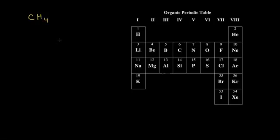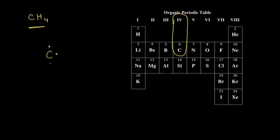If I look at the molecular formula CH₄, which is methane, and I want to draw a dot structure for the methane molecule, I would go over here to my organic periodic table and find carbon. I can see carbon is in group four, therefore carbon will have four valence electrons. So I can draw a carbon with its four valence electrons around it like that.